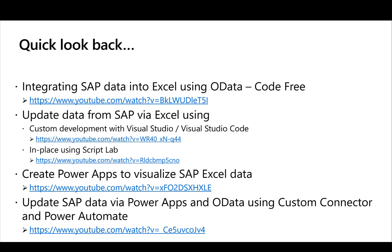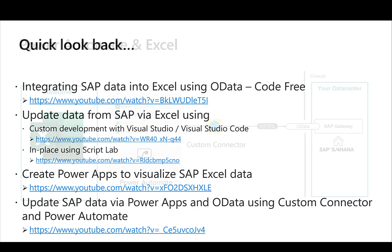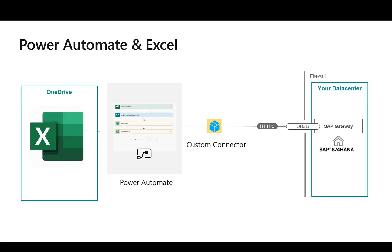Now in this video, we want to leverage that same custom connector and most of the Power Automate script we used in Power Apps, but this time we want to use it from Excel. The scenario: I have my Excel sheet with SAP data coming via OData from my SAP system, and from Excel we'll trigger a Power Automate flow that calls the custom connector and then updates data in the SAP system.